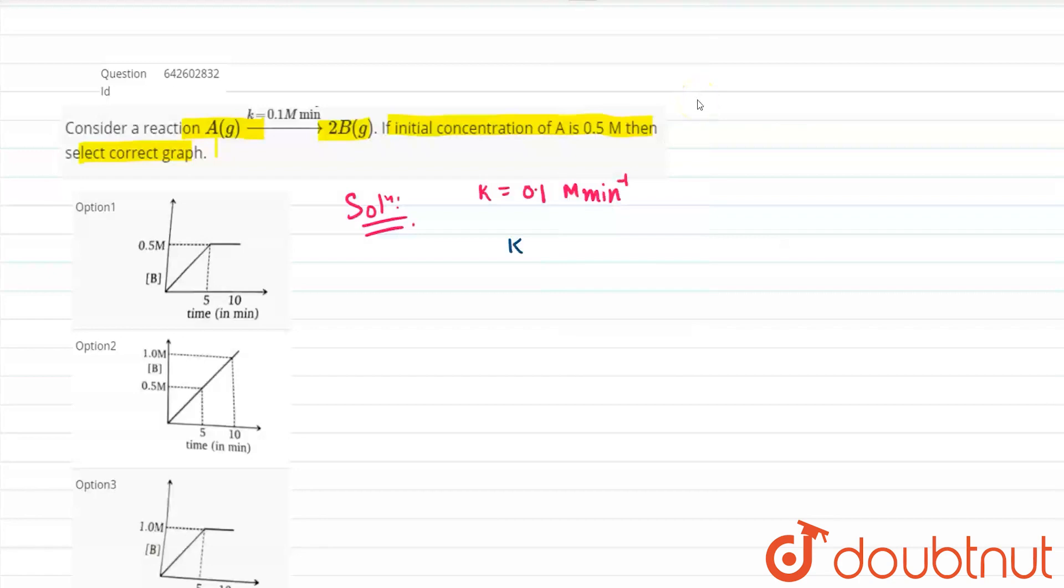So basically the general unit of k is generally denoted as moles per liter raised to the power 1 minus n into second inverse. And what is this moles per liter? This is basically molarity. So it is 1 minus n into second inverse.